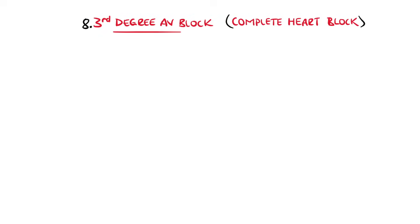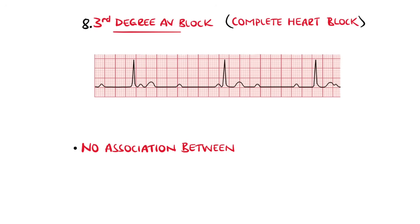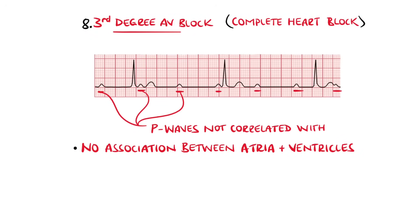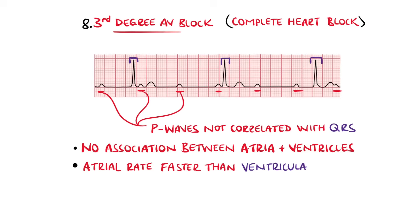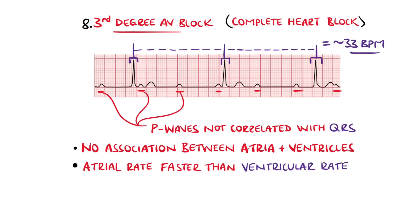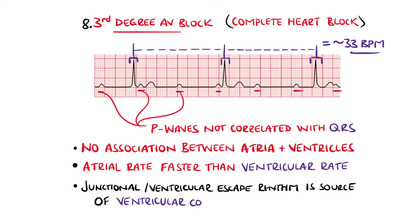In third degree AV block, there is no association between atrial and ventricular contractions. On the ECG, this appears as P waves that do not lead to a QRS complex and more P waves than QRS complexes, indicating a higher atrial rate than ventricular rate, which is most commonly severely bradycardic. Typically there are regular P waves and regular QRS complexes but no association between the two, with the QRS complexes being generated by junctional or escape rhythms.